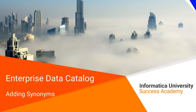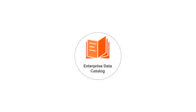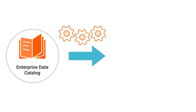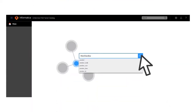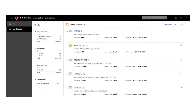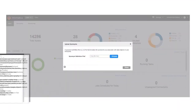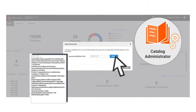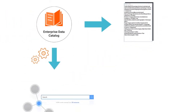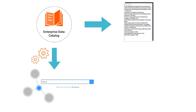Welcome to Adding Synonyms. Enterprise Data Catalog provides advanced capabilities that help you define synonyms for your data assets. You can then search for your corresponding data assets using these synonyms. It's as easy as creating a normal text file with all your synonym definitions and uploading them to the Catalog Administrator. Enterprise Data Catalog accesses this file and enables synonym search. With just one single file, you're improving the quality of your search as well as your user experience.